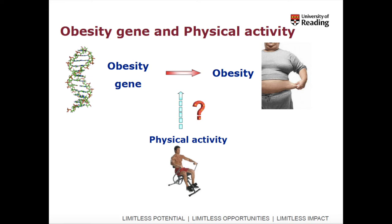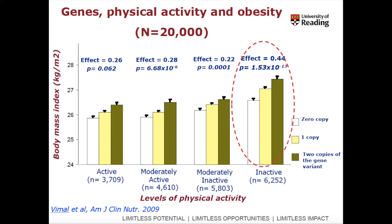We know that people who carry two copies of the obesity gene have an increased genetic risk of obesity — that is well established. The question is whether doing more physical activity can overcome that genetic risk. This question was raised when the obesity gene was discovered. A study was carried out about 10 years ago in 20,000 individuals from the UK population, measuring the genetic variation — whether those 20,000 people are 0, 1, or 2 copy — and measuring BMI levels.